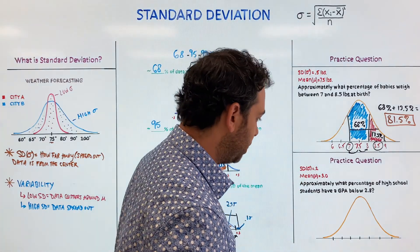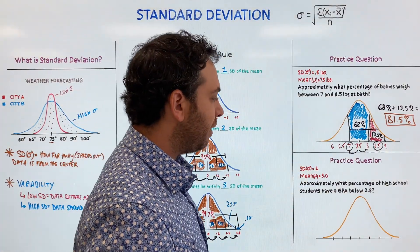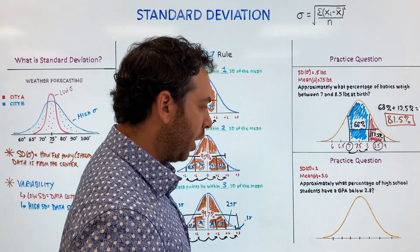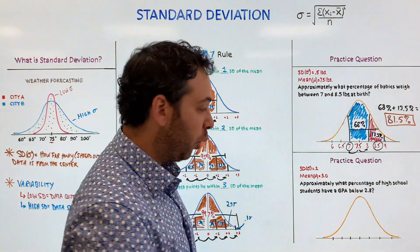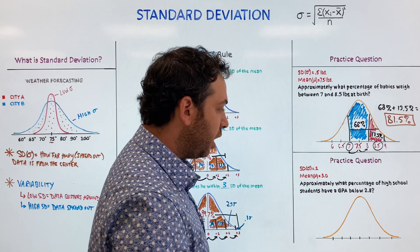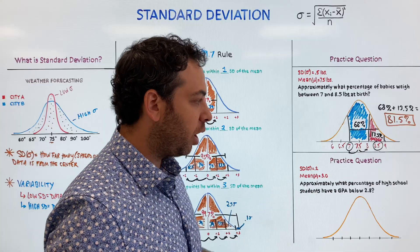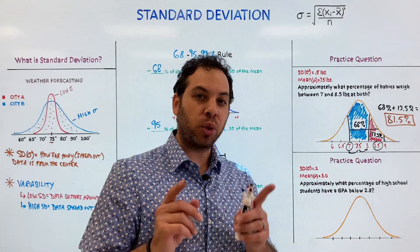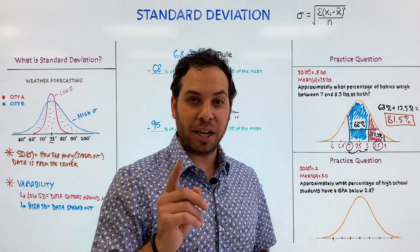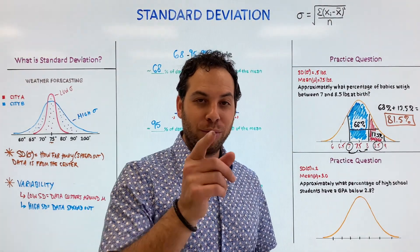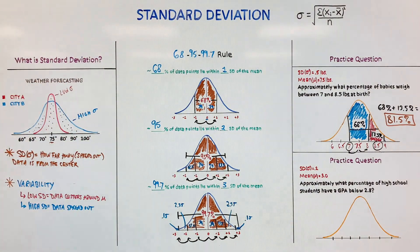Now we have a practice question for you to try on your own: approximately what percentage of high school students have a GPA below 2.8, with a standard deviation of 0.2 and a mean GPA of 3.0? I want you to try this on your own. I'll put the answer below the video in the discussion box so you can compare. Do the best you can!